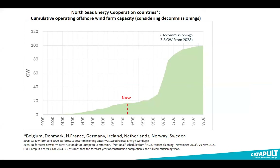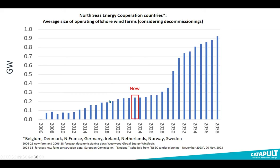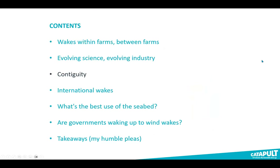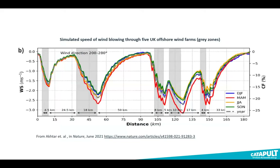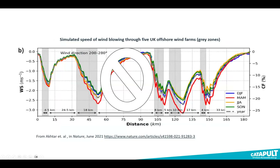There's a lot of seabed left to be taken up by wind farms, and these farms are getting bigger and bigger. This raises the issue of contiguity — many planned farms are right up against each other. All else being equal, that means the period of respite or recovery between farms simply doesn't exist.